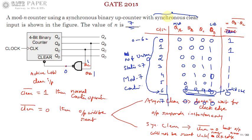To summarize: if it is synchronous clear, the answer is mod-7. If it is asynchronous clear, the answer is mod-6. Remember this — it is very important. The N value here is 7, making it a mod-7 counter.